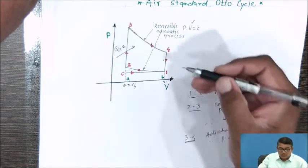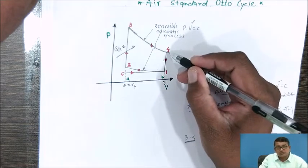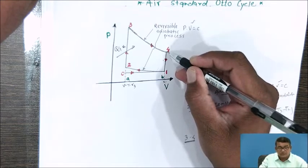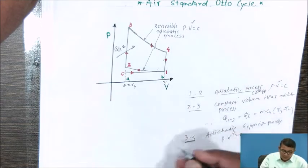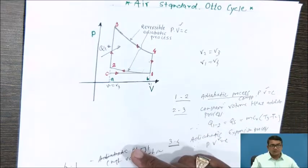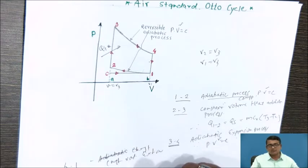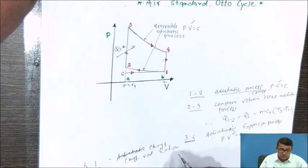After the completion of process 3 to 4, the next process is 4 to 1 — the constant volume heat rejection process. These are the four processes of the Otto cycle.